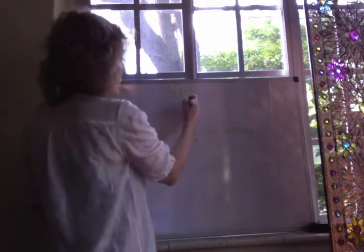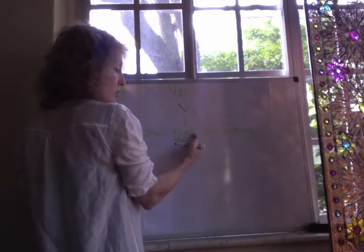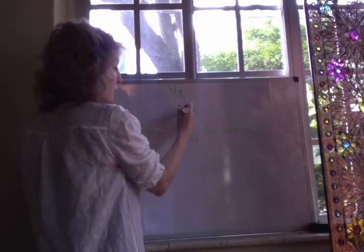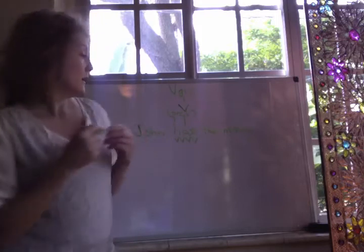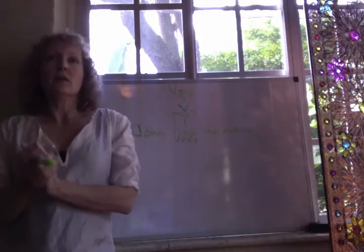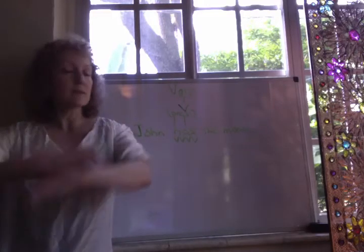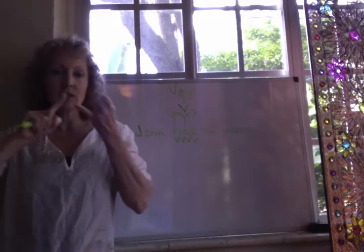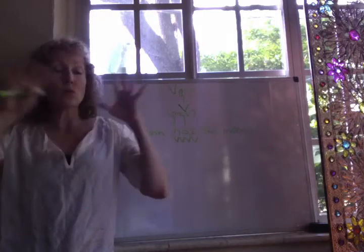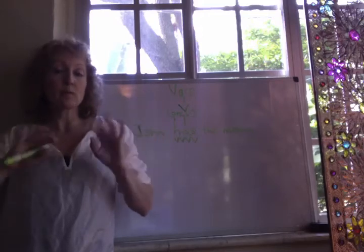If a verb group has a single verb, it doesn't matter which verb it is — it can be the verb 'have,' it can be a form of the verb 'be,' it can be anything whatsoever. That will always and only be your complete main verb. However, what if you have an example where you have more than just the verb 'have' — something following it within the verb group?